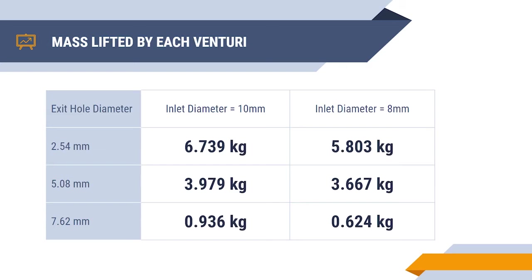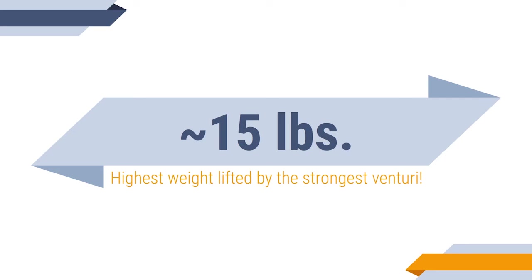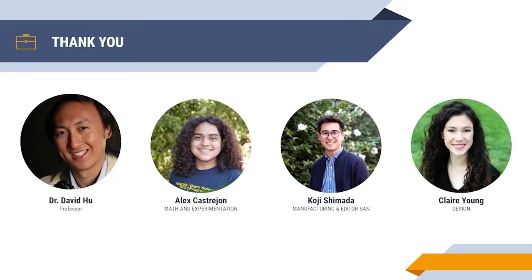Our data shows that the biggest difference between the inlet and outlet diameter led to the heaviest weight being lifted, which makes sense because the pressure drop will be the greatest. The Venturi with a similarly sized inlet and outlet could barely lift any weight at all. During our testing, we found that the strongest Venturi could lift approximately 15 pounds — very impressive for a simple 3D printed prototype. And that's it, thanks for listening.